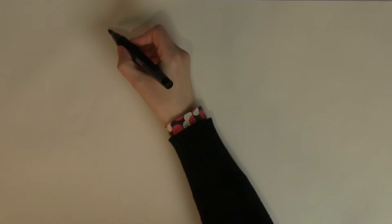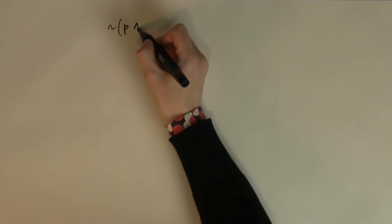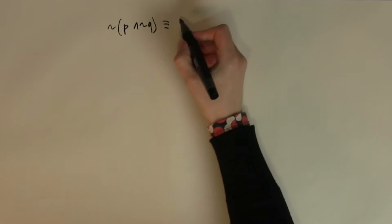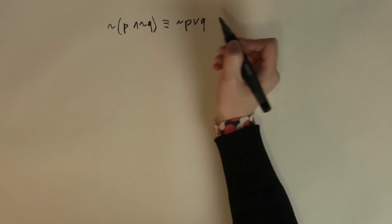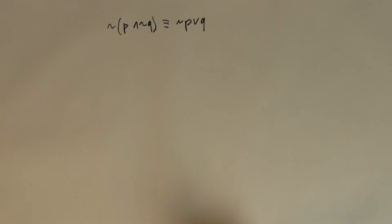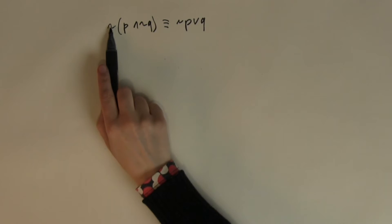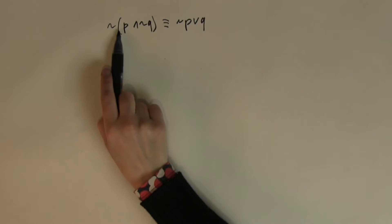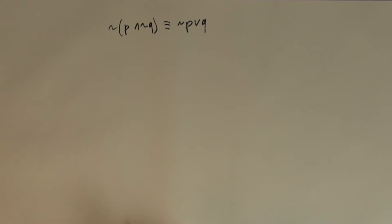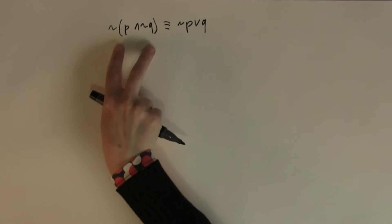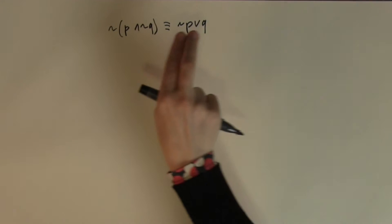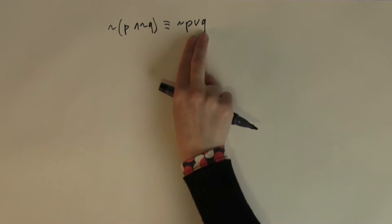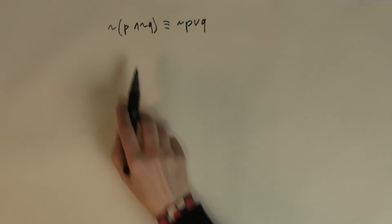Let's say you are posed with the problem of ¬p∧¬q being logically equivalent to ¬p∨q, and you were asked to prove this. You can either use the laws of logic and apply De Morgan's law to break up the bracket and see that the two expressions are the same, or you can use truth value tables to show that these two expressions are logically equivalent. For that, you need to do a truth value table for each expression and show that the two are exactly the same.